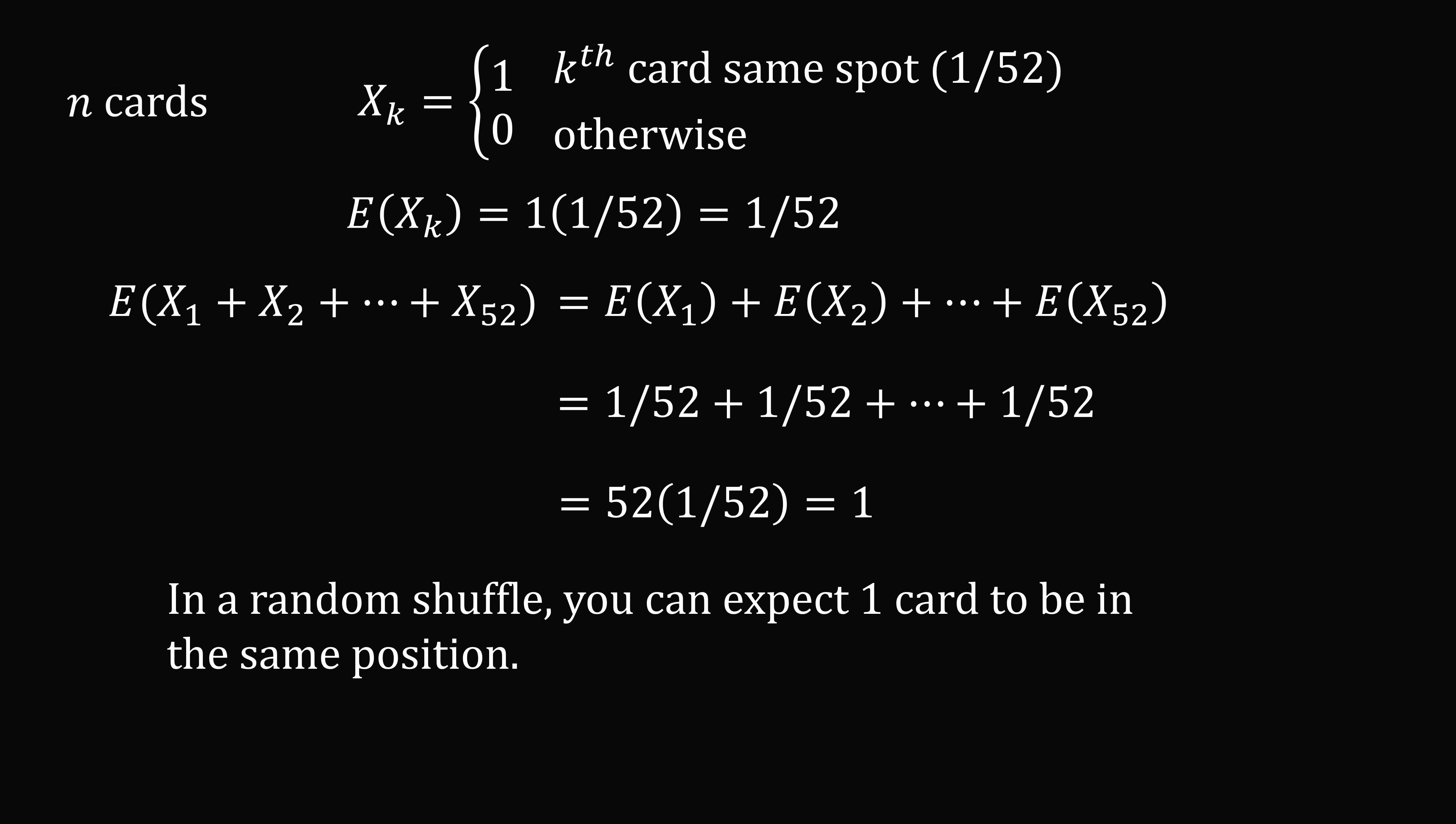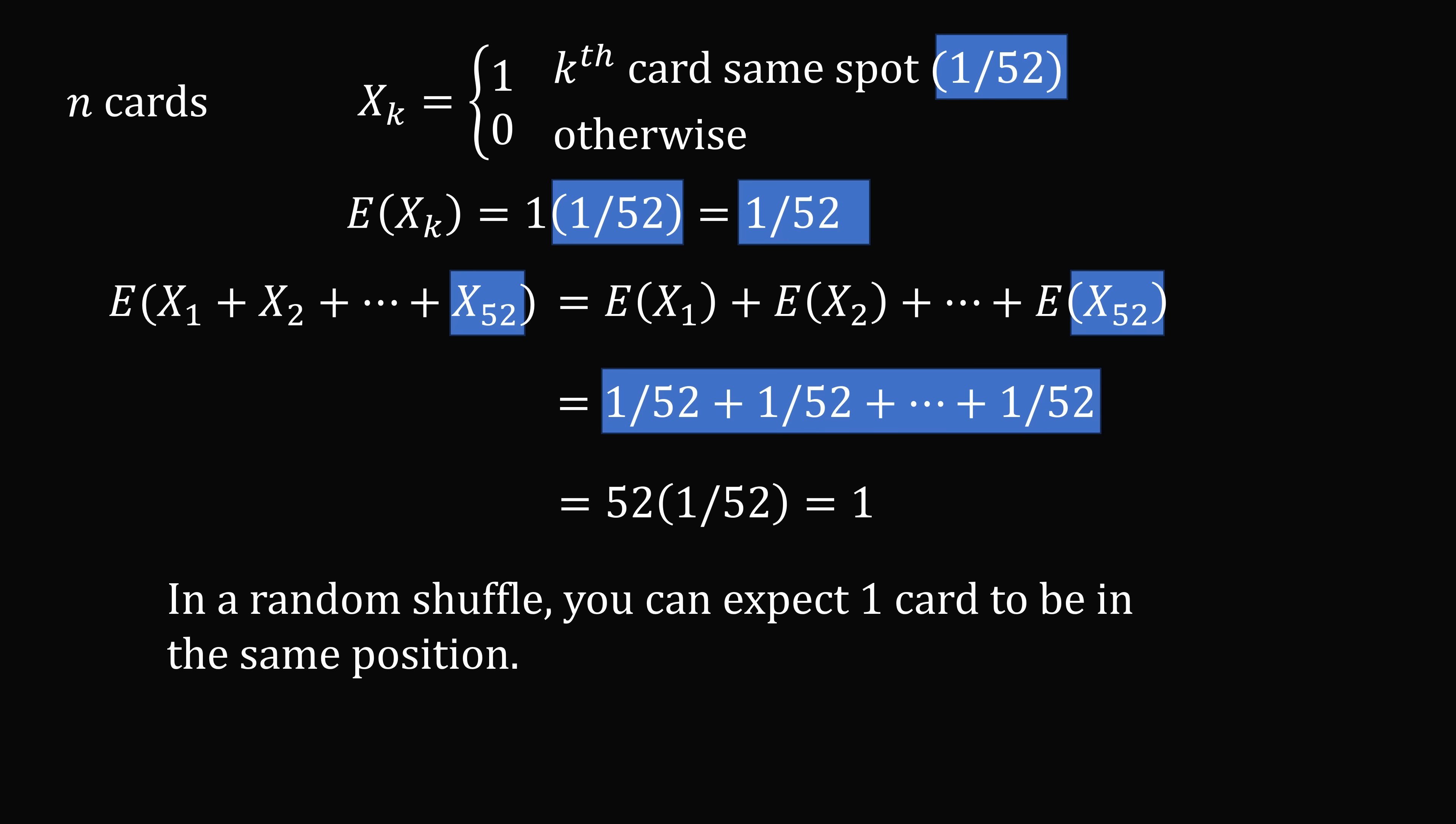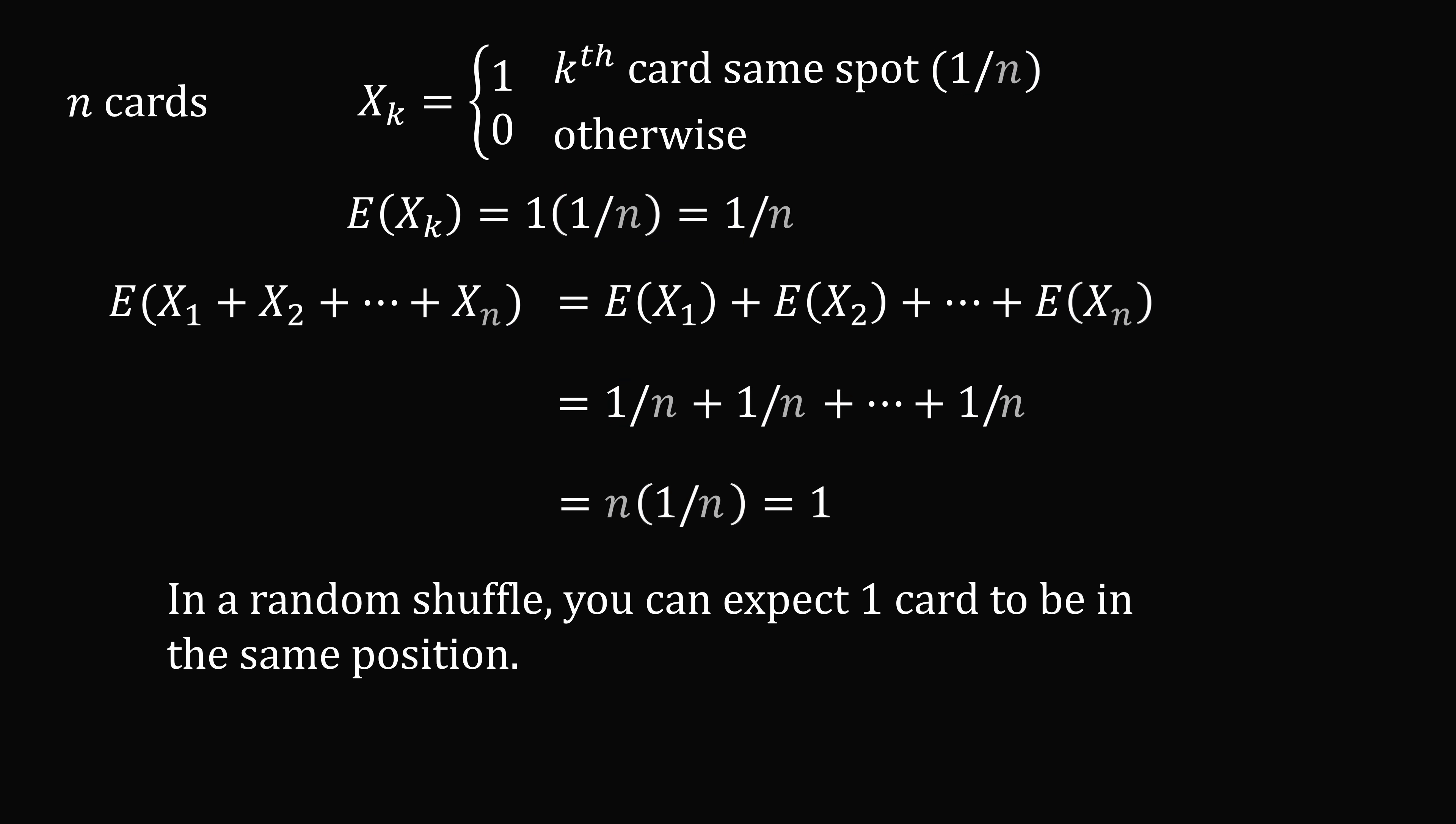But what if the deck had n cards for n greater than or equal to 1? We just need to modify the argument from n equals 52. So wherever we have 52, we can replace that with n, because the exact same logic will apply. Each of the n cards will have a 1 over n chance, and there will be n cards. So we just change 52 to be n in each of these arguments, and we end up with exactly the same result.